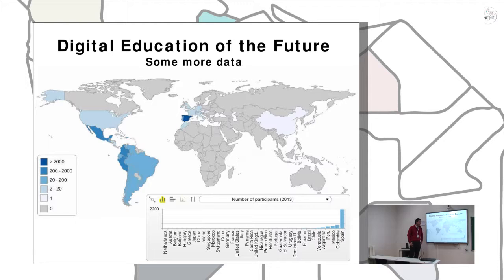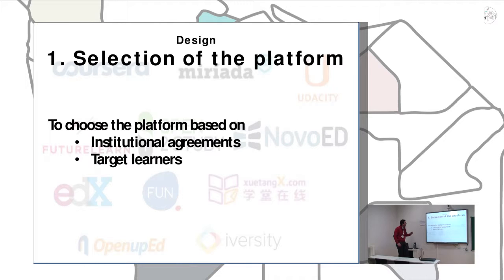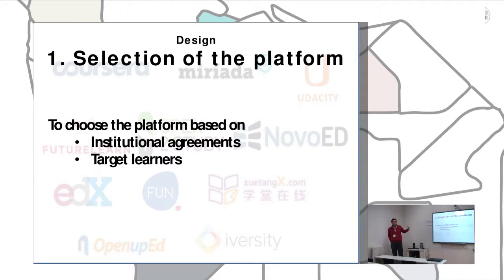Now I'll go with the recommendations. Talking about the design — the selection of the platform. Some institutions have agreements with big platforms like Coursera or edX. If you don't have any agreement, try to look at your target learner. In our case, target learners were Spanish speakers, and at that time Miliadas had just started, so we decided to join. I think this was the right decision — we succeeded in the number of people who enrolled in our course.